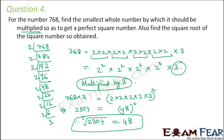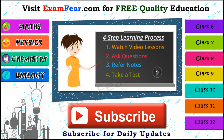Now this prime factorization method looks quite suitable to find square roots, but it becomes very difficult when dealing with larger numbers. So therefore we have another option, which is called the division method to find square roots. In order to understand the division method, we need to get some idea about it first.